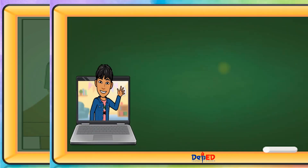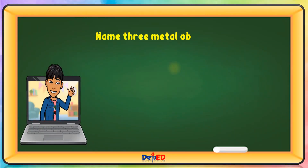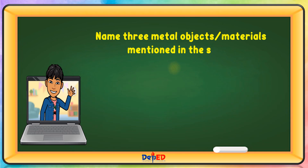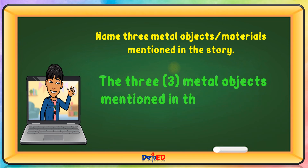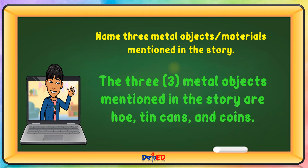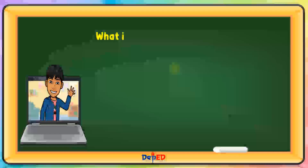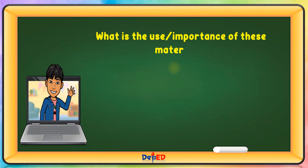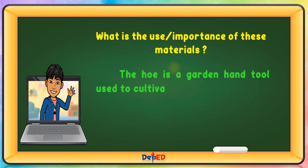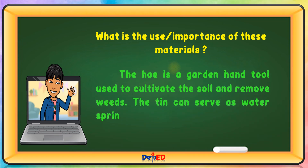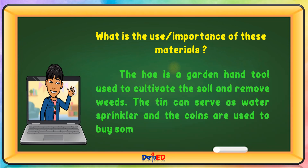Name 3 metal objects or materials mentioned in the story. The three metal objects mentioned in the story are: hoe, tin cans, and coins. The hoe is a garden hand tool used to cultivate the soil and remove weeds. The tin cans serve as a water sprinkler, and the coins are used to buy something that we need.